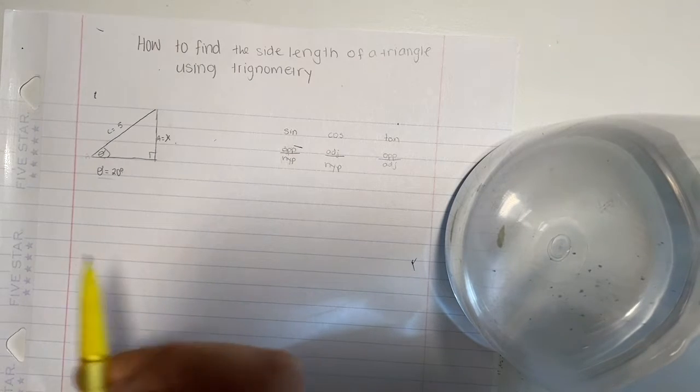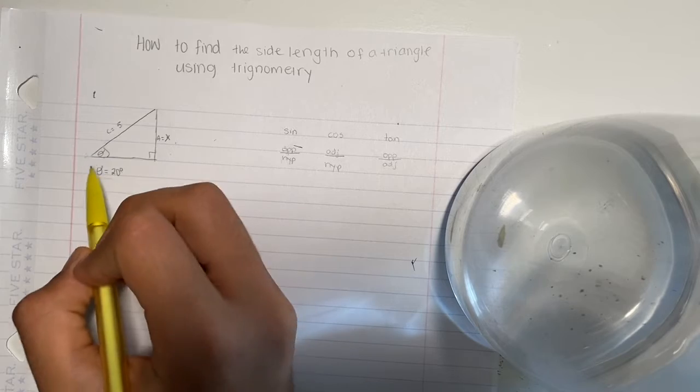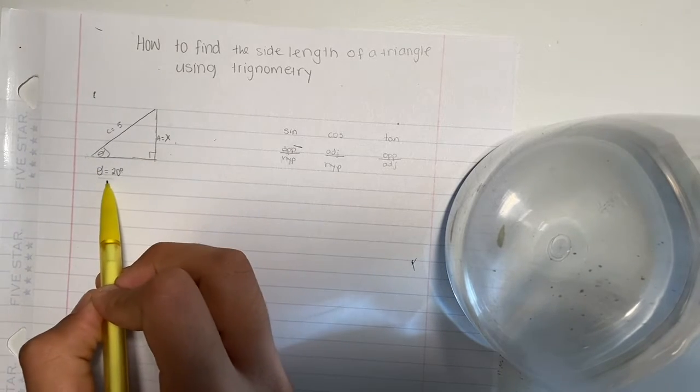Okay, so in this problem we see that we have to find side a, and we have listed here that c equals 5 and the angle equals 20.